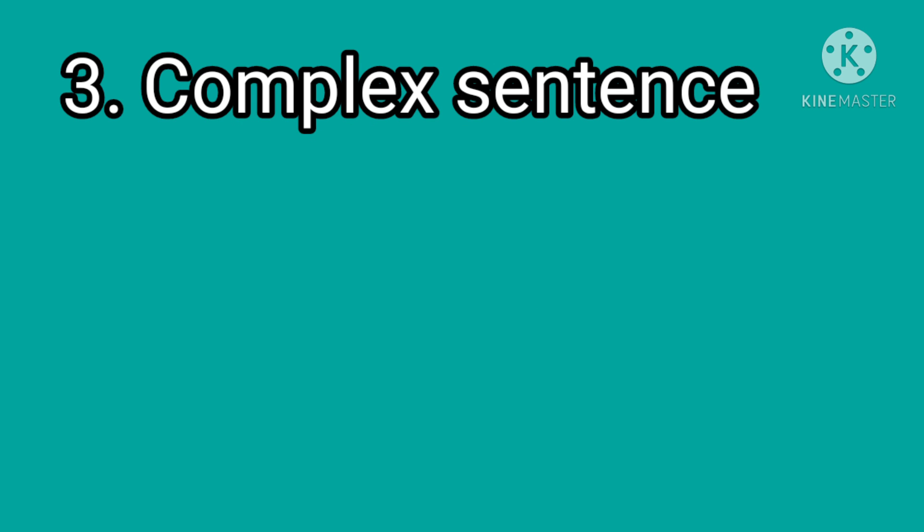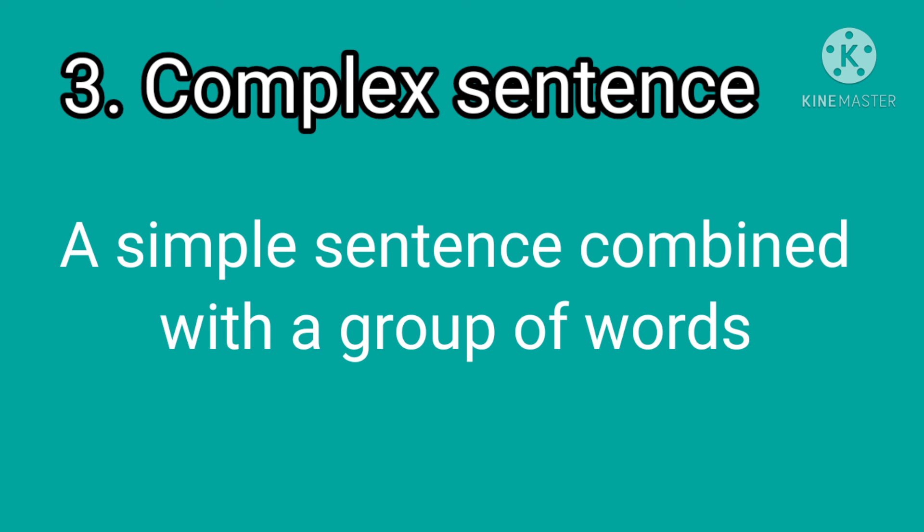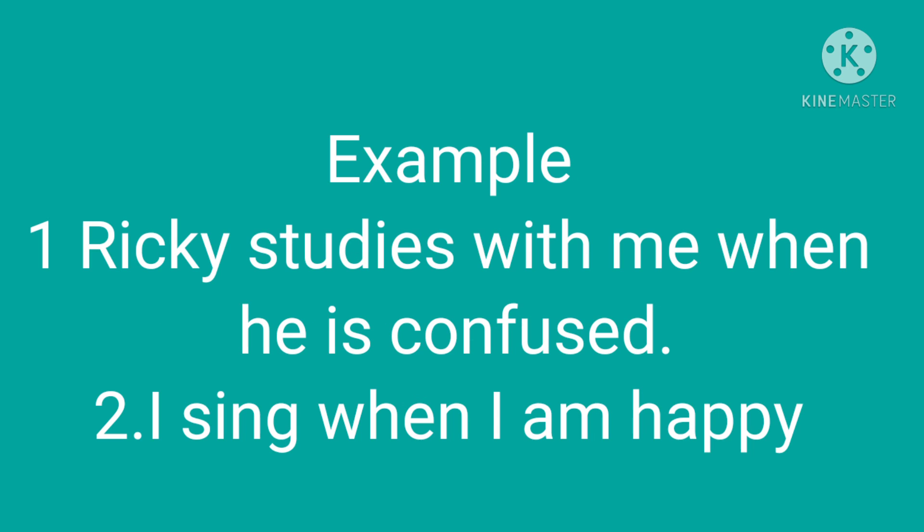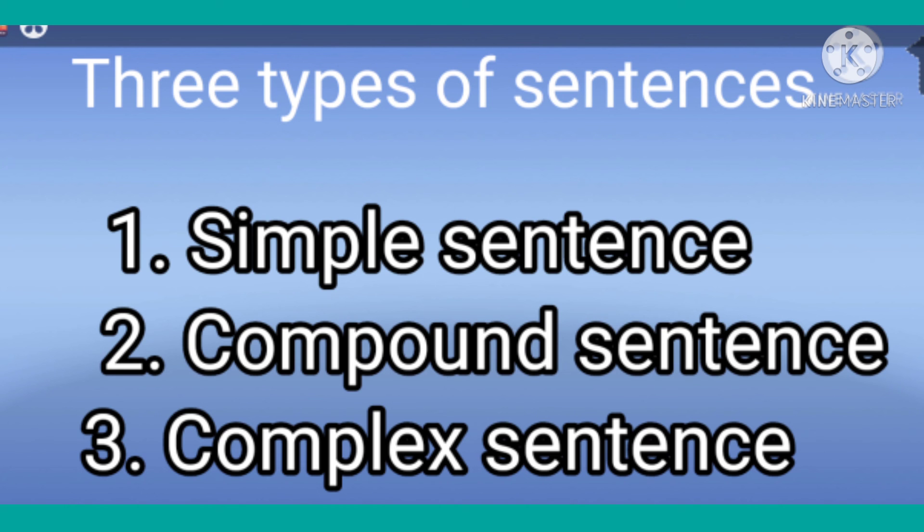The third type of sentence is complex sentence. A complex sentence means a simple sentence which is combined with a group of words. Examples: Ricky studies with me when he is confused. I sing when I am happy. I hope students you have understood the three types of sentences.